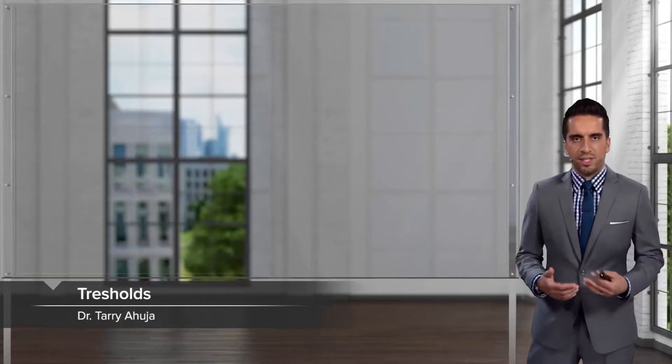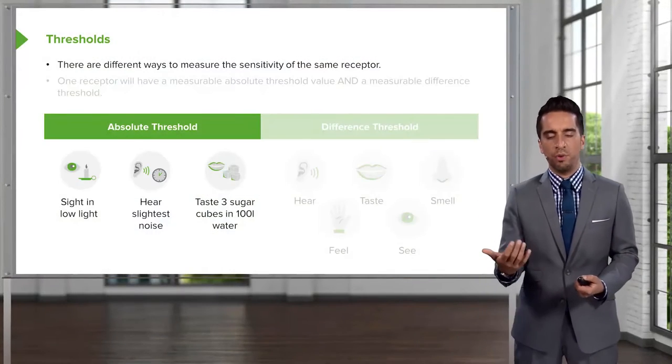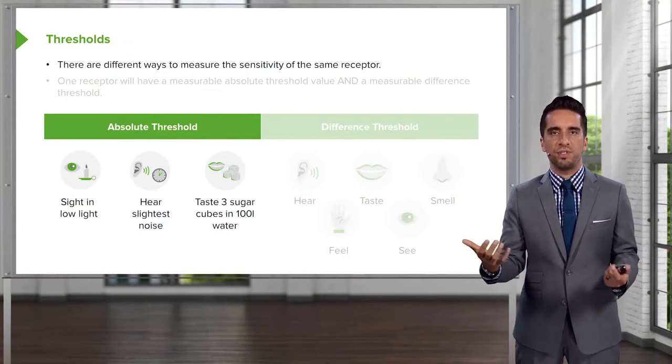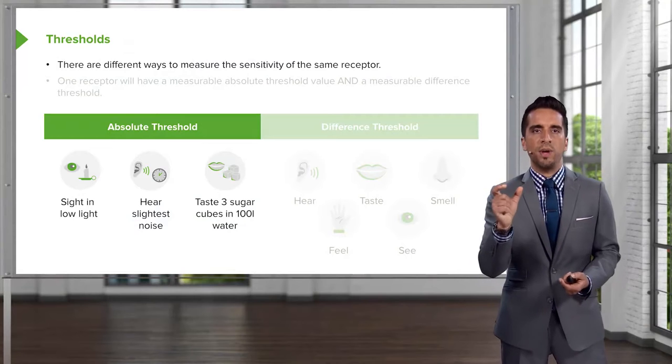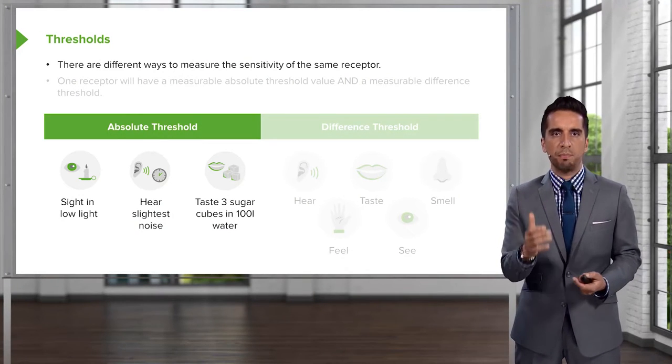Let's talk about how we sense the environment around us. There are a lot of ways that we can actually do this, and we're going to walk through a whole bunch of ways we detect the things that are interacting with us. One of the easiest ways to determine whether or not there's something around us is something called thresholds. You can have two types of thresholds — one is called absolute threshold.